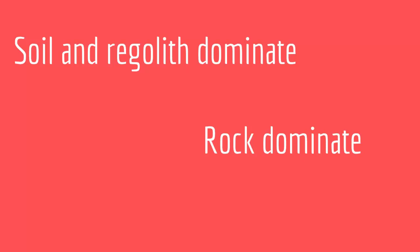Before we do that, note that a mass wasting is either dominated by soil and fine material, or it is dominated by rocks — big chunks of rock where the whole mass wasting is rock-dominated. So either a landslide or a mass wasting is soil-dominated or it is rock-dominated.